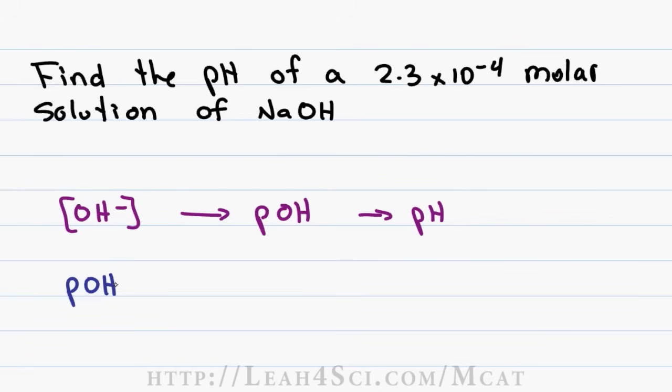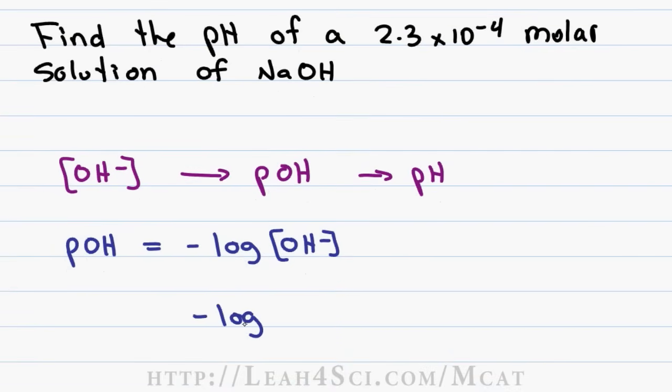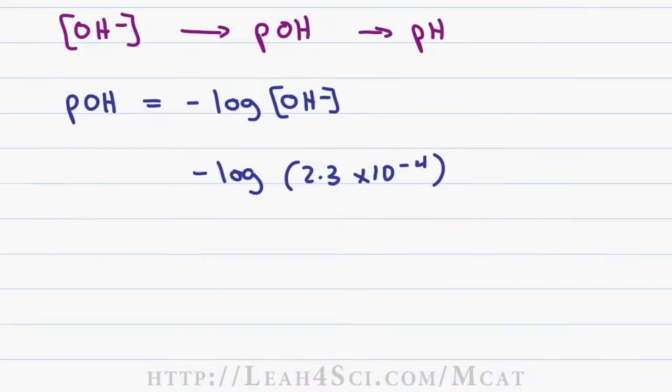But the difficult part is going from the OH minus concentration to the pOH. We'll use the following formula: pOH is equal to negative log of the OH minus concentration, which in this question is negative log 2.3 times 10 to the minus 4. Great, I have the setup but I don't have a calculator, how do I proceed? So how do we find the negative log of this value? Let's focus on the trick first and then we'll come back to solve this question.